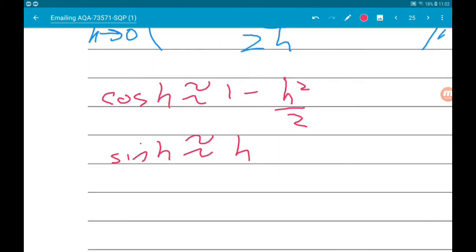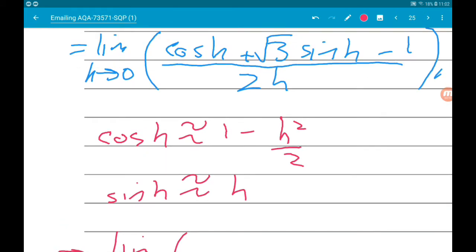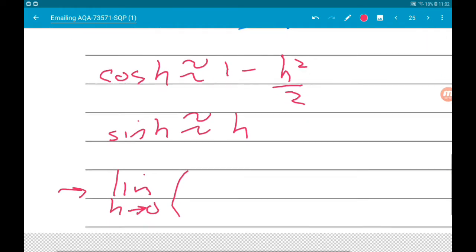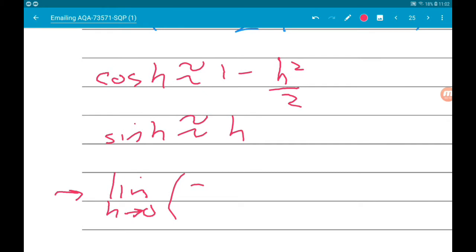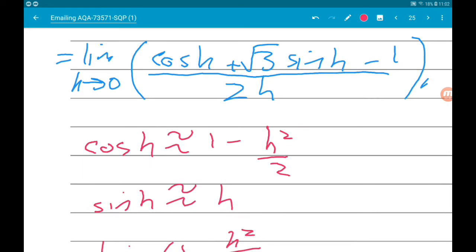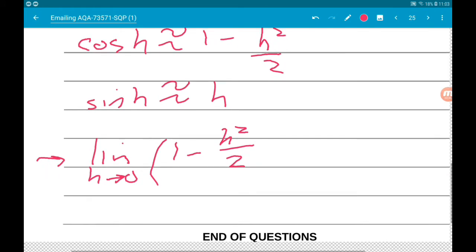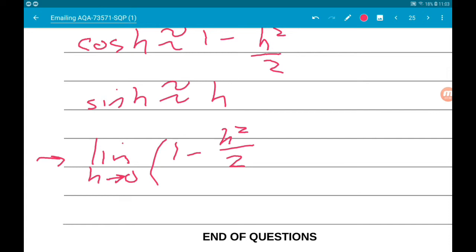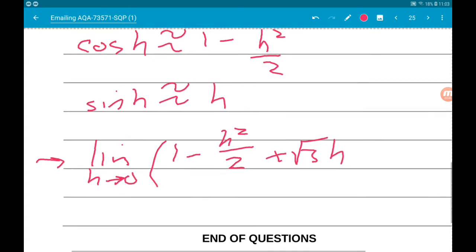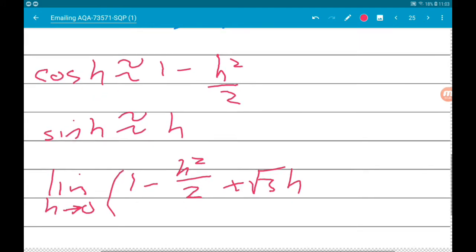We've then got the limit as h tends to zero of, well, cos of h is one minus h squared over two, and then we've got root three sine of h. By the small angle formulas, sine h is h, so let's add root three h, and then we've got that minus one at the end, and don't forget that it's all over two h.